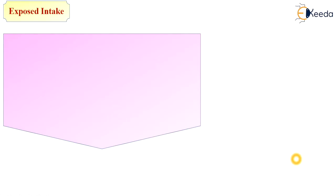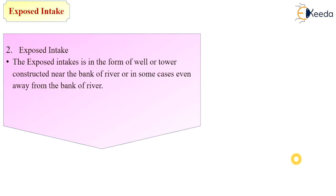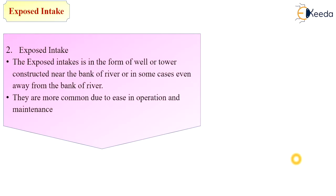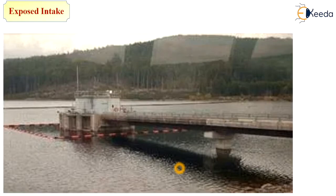The next type of intake, depending on position, is the exposed intake. The exposed intake is in the form of a well or tower constructed near the bank of a river, or in some cases even away from the bank. They are more common due to ease in operation and maintenance because the whole structure is above ground. These are typical diagrams showing exposed intake structures constructed above the water level.